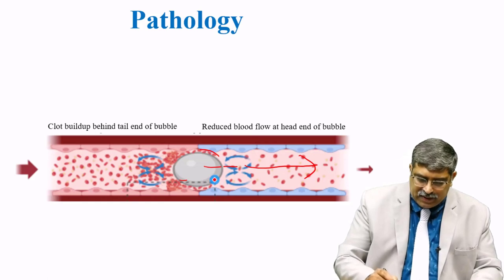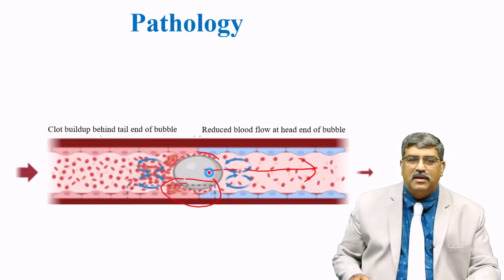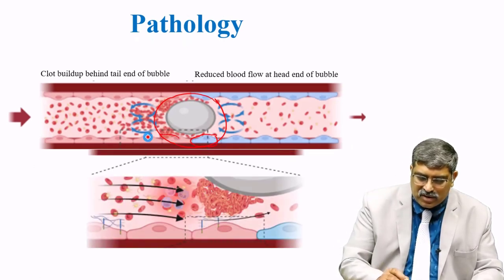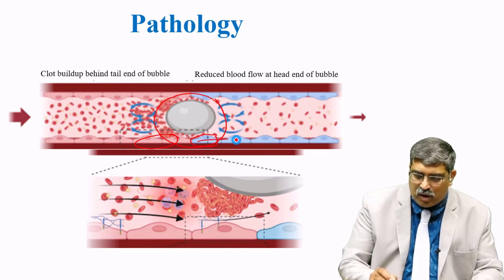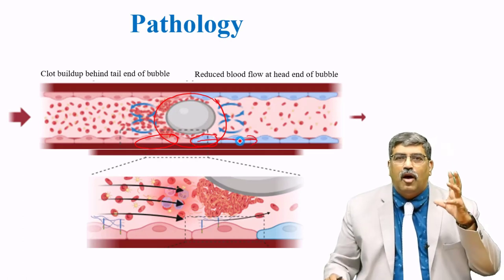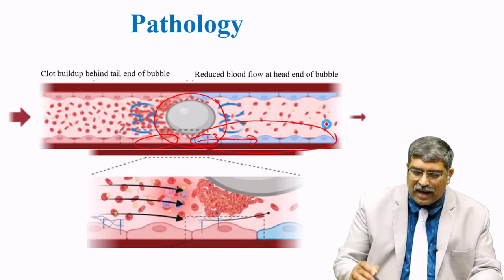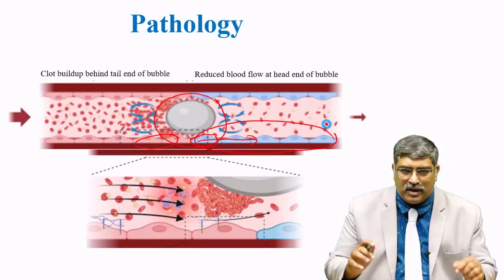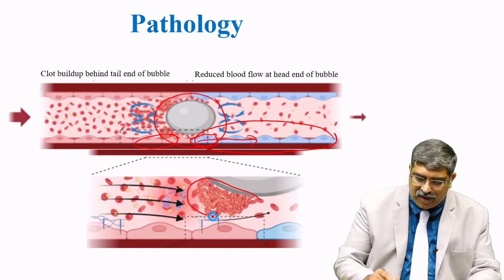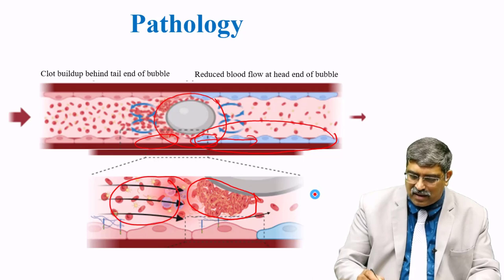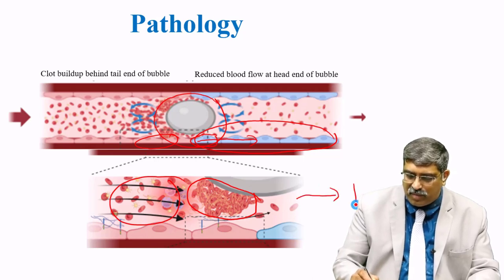Looking at the junction between the bubble and the endothelial cells. Here the endothelial which was oxygenated now becomes blue. This is called the blue endothelial cells, and ischemic penumbra happens with the endothelial cells. Here you can see the fibrin clot formation happening and the blood flow is sluggish here, and there is going to be reduced forward flow.